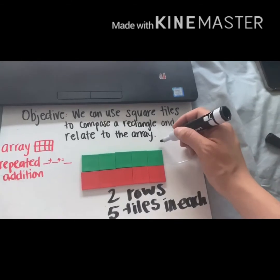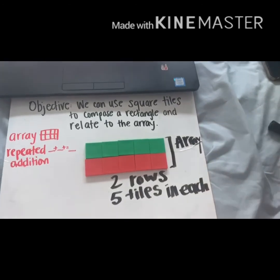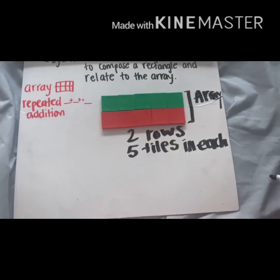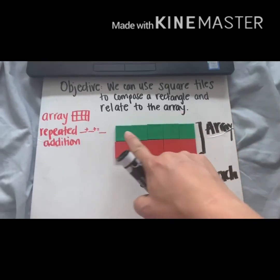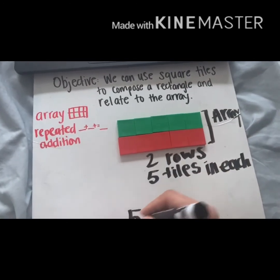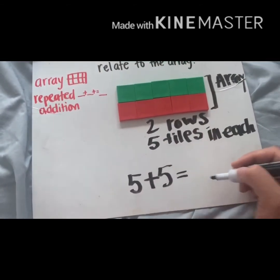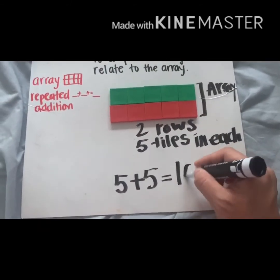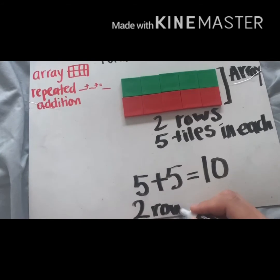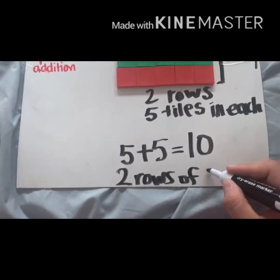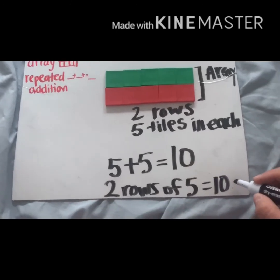Now we want to find the total amount of all of these tiles together in both rows, which make our array. Remember, this whole thing is called an array. What can we do to find the total? We can write a repeated addition sentence: five plus five gives us a total of ten. So we had two rows of five, equals ten tiles.